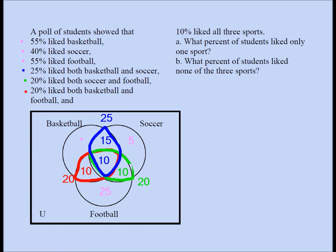55% like basketball — the four regions inside the basketball circle should add up to 55. I have 10 plus 10 plus 15, which is 35, plus 20 is 55. In a three-set Venn diagram there are 8 distinct disjoint regions. I've now accounted for 7 of those 8 regions, and 1 is left — the 'none' region outside all circles.